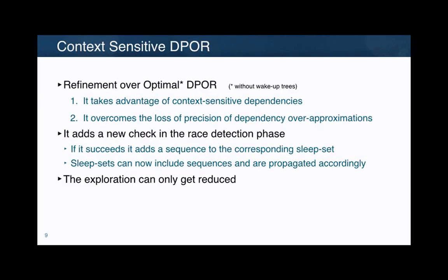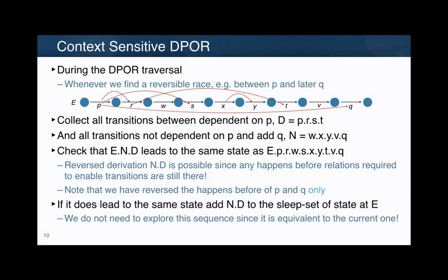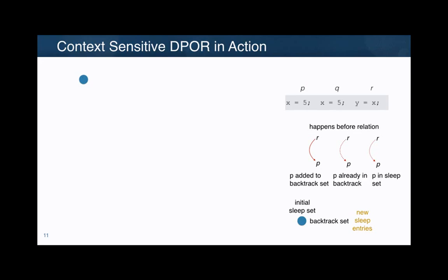This is what we have been able to do, in a way that we believe is reasonable, and we get good results. We have proposed what we call context-sensitive dynamic partial order reduction (CS-DPOR), which is a refinement over optimal DPOR. It is able to take advantage of context-sensitive dependencies and, with the same cost, overcome the loss of precision from dependency over-approximations. With this algorithm, the exploration can only get reduced. Now I'm going to show you in this example how we make a difference.